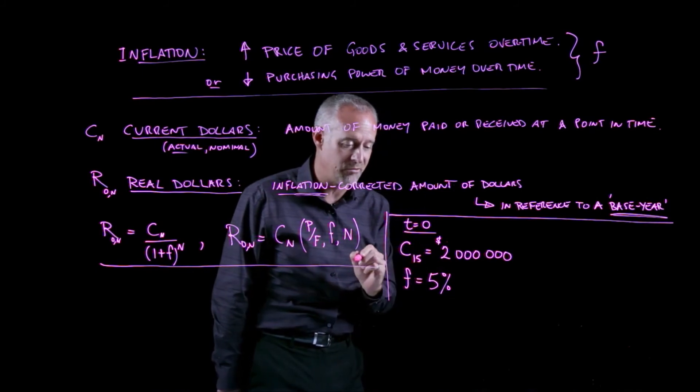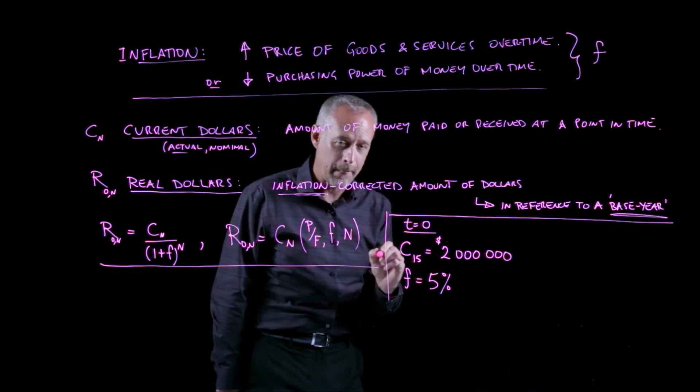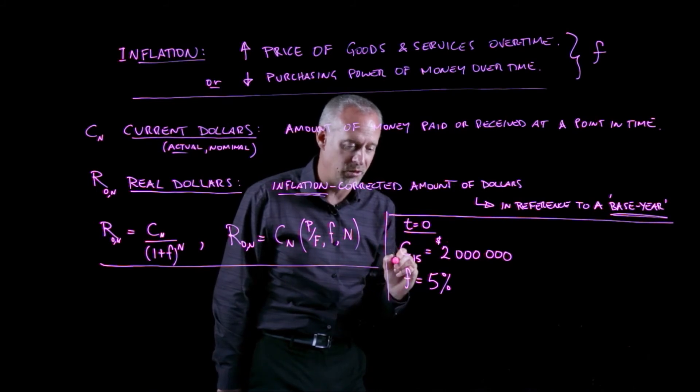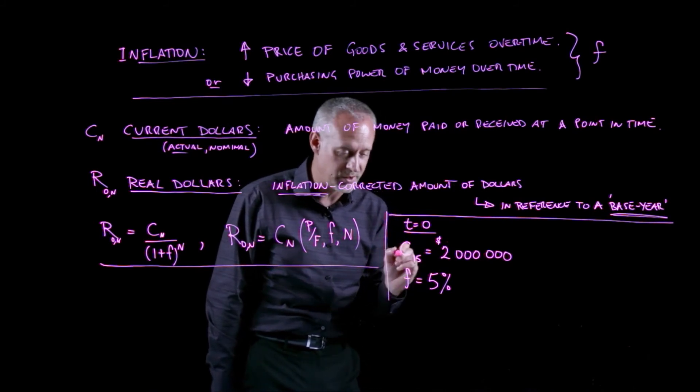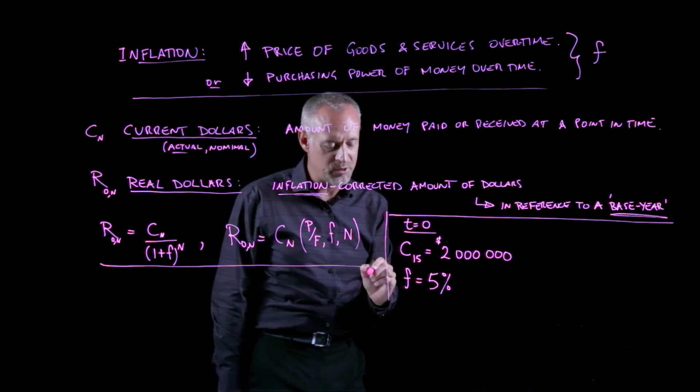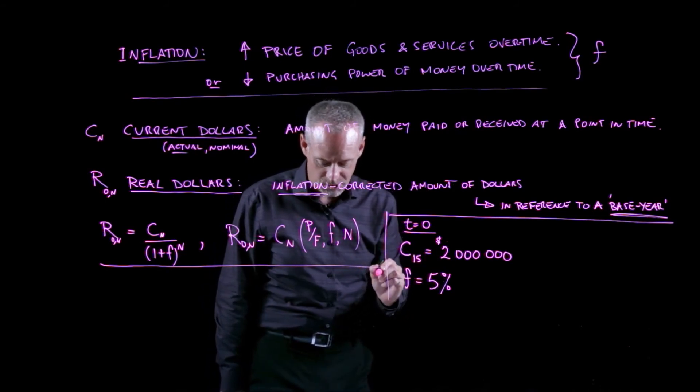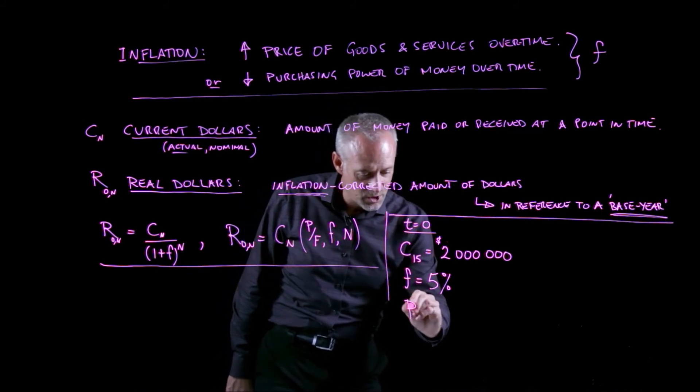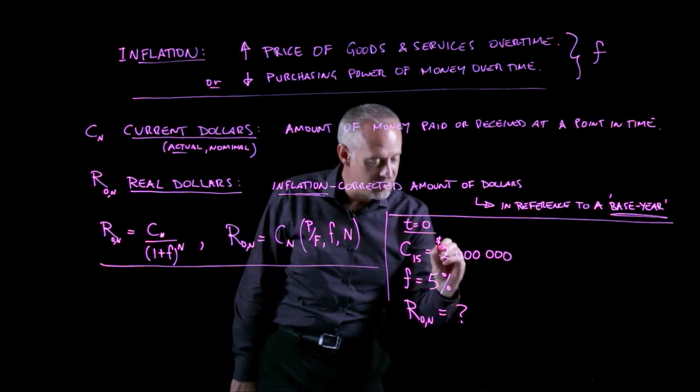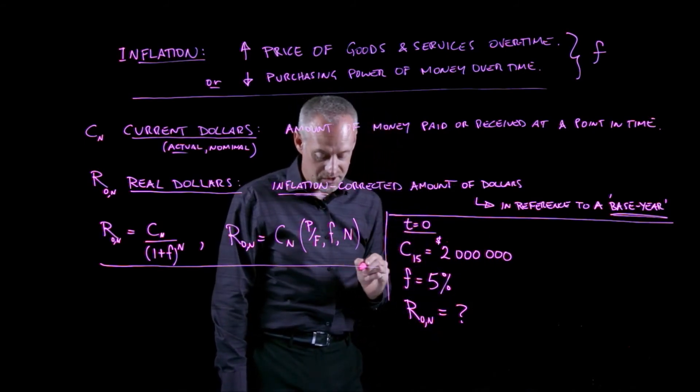So we're also told in the problem that the inflation is 5%. Incidentally, that's quite a high inflation rate. Inflation typically in Canada for the last several decades hovers around the 2% range, sometimes lower, sometimes higher. But we'll assume a 5% inflation because that's what it says in the problem. And what we'd like to know is what's the real value of this 2 million dollars 15 years from now.